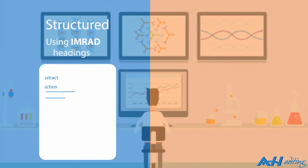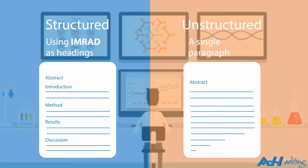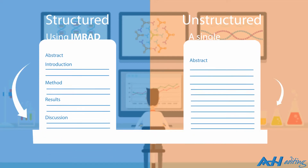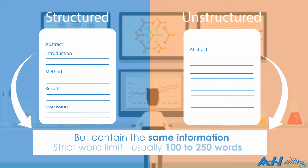Your abstract may be structured using the IMRAD headings, or unstructured in a single paragraph, but either must contain essentially the same information. Remember, there's a strict word limit, usually 100 to 250 words.